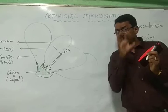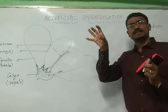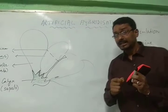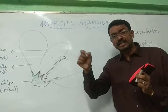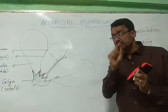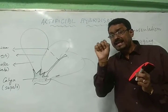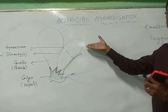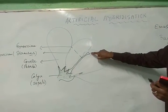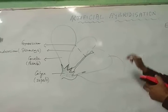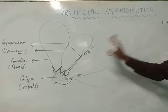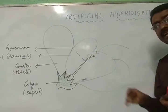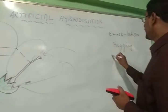When the flower matures, then artificially the stigma — that is the gynoecium portion — pollen grains are brought and dusted over the stigma. So pollen is brought artificially and dusted there. After that, it is re-bagged.